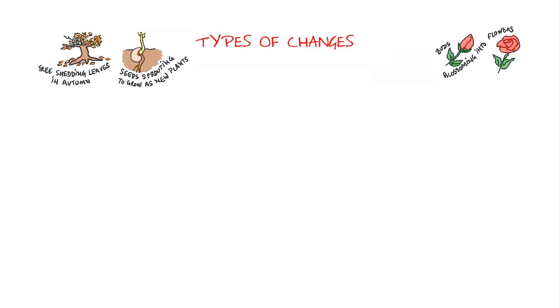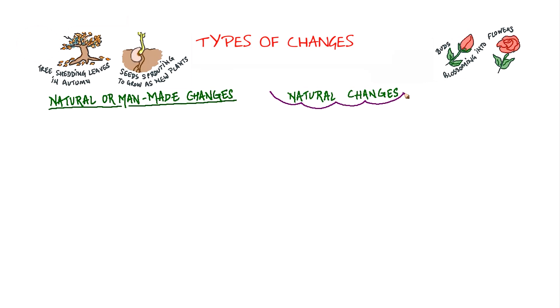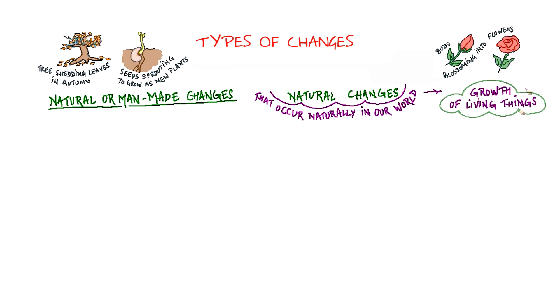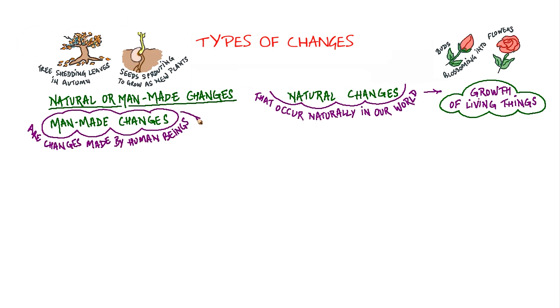Types of changes. The changes that take place around us continuously can be natural or man-made changes. Natural changes are those that occur naturally in our world. Growth of living things is an example of a natural change. Man-made changes are changes made by human beings. Cooking of food is an example of a man-made change.